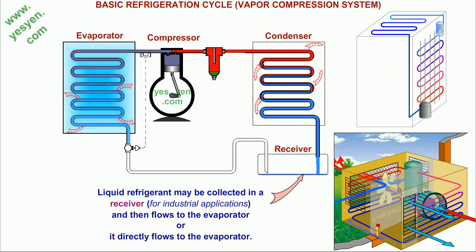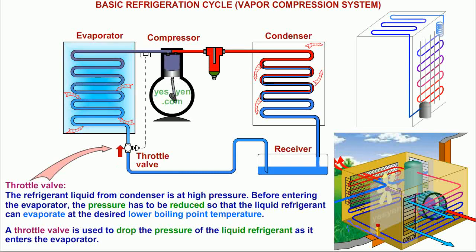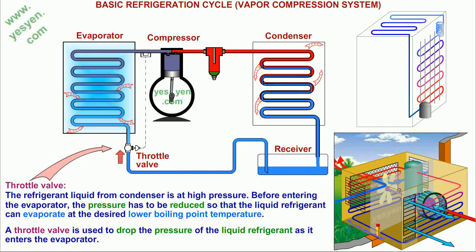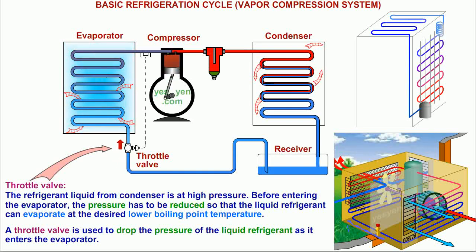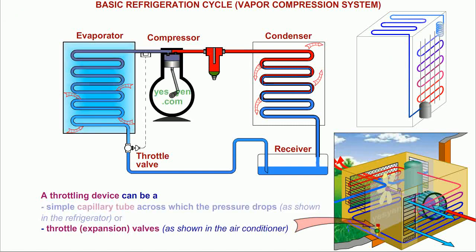Liquid refrigerant may be collected in a receiver and then flows to the evaporator, or it directly flows to the evaporator. Throttle Valve: The refrigerant liquid from the condenser is at high pressure. Before entering the evaporator, the pressure has to be reduced so that the liquid refrigerant can evaporate at the desired lower boiling point temperature. A throttle valve is used to drop the pressure of the liquid refrigerant as it enters the evaporator. A throttling device can be a simple capillary tube across which the pressure drops, as shown in the refrigerator, or a throttle valve as shown in the air conditioner.